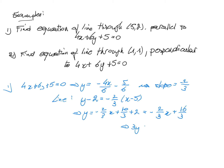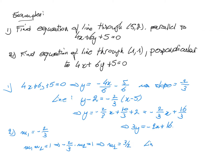Rewriting, we get 3y equals minus 2x plus 16. For the second problem, m1 is minus 2 over 3 and since the lines must be perpendicular, m1 times m2 equals minus 1, so minus 2 over 3 times m2 equals minus 1, giving m2 equals 3 over 2. The equation of the perpendicular line is y minus 1 equals 3 over 2 times (x minus 1), which simplifies to y equals 3 over 2 times x minus 1 over 2.